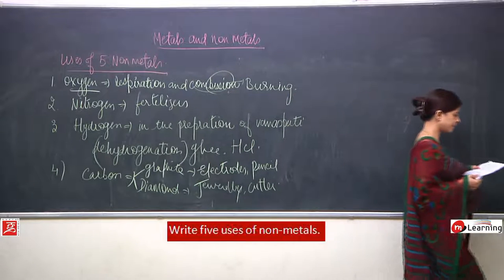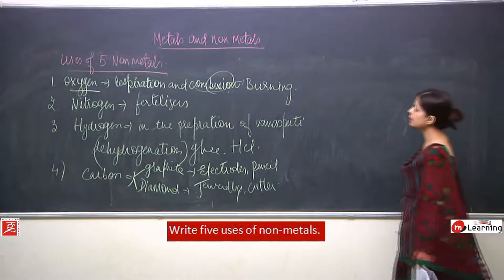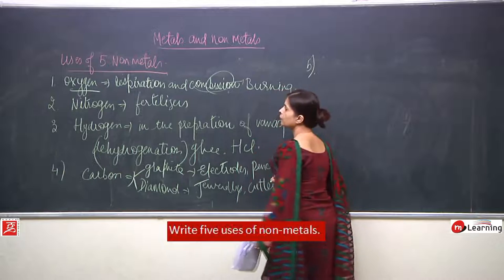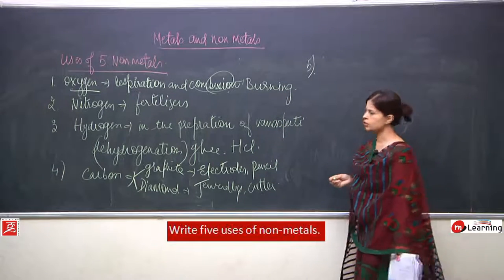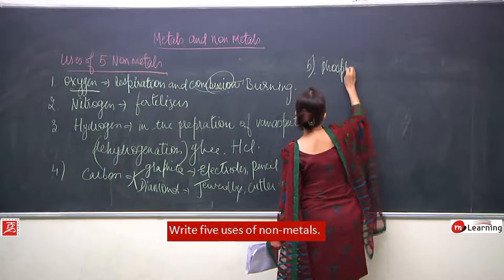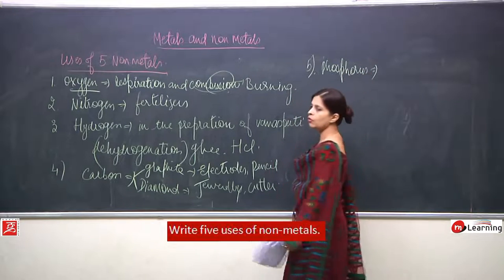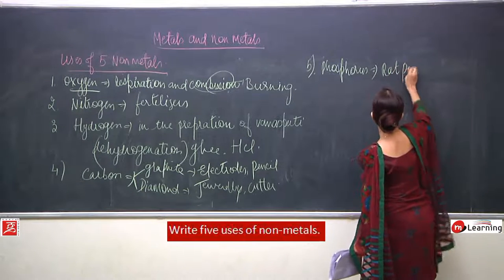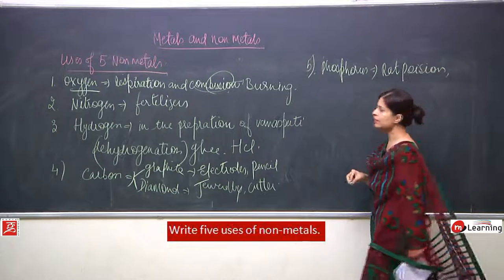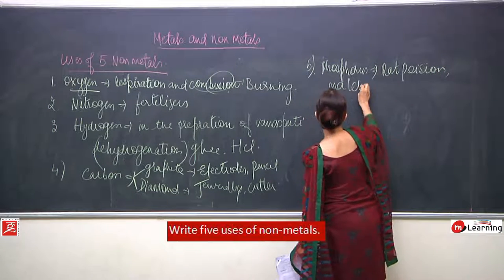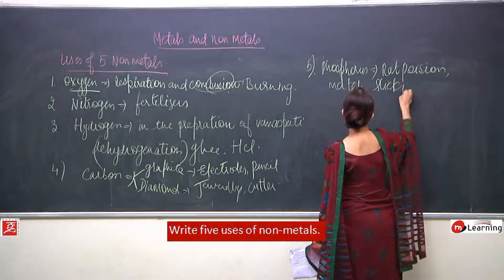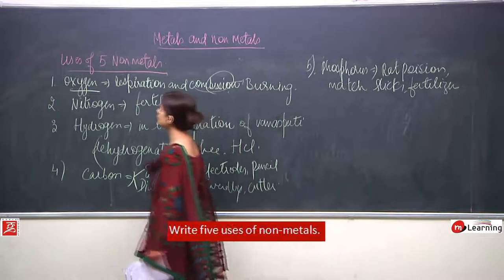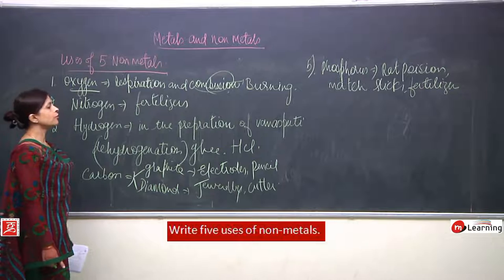We have discussed only four — we need to write five. The fifth one: phosphorus. Phosphorus is used in making poison, in making plastics, and even in making fertilizers. So this completes the fifth one — uses of five non-metals.